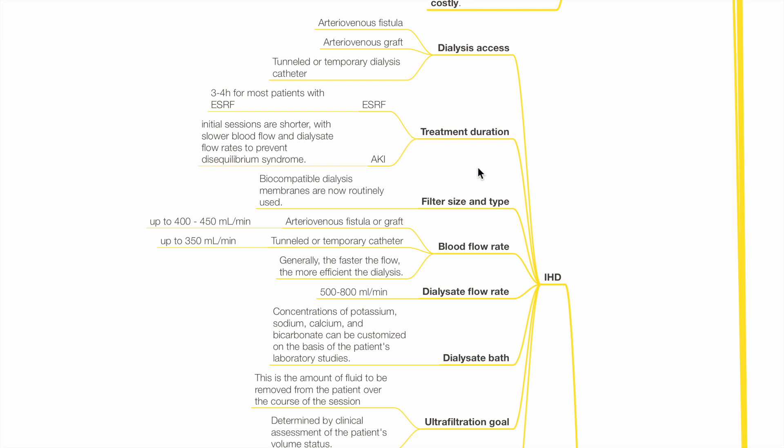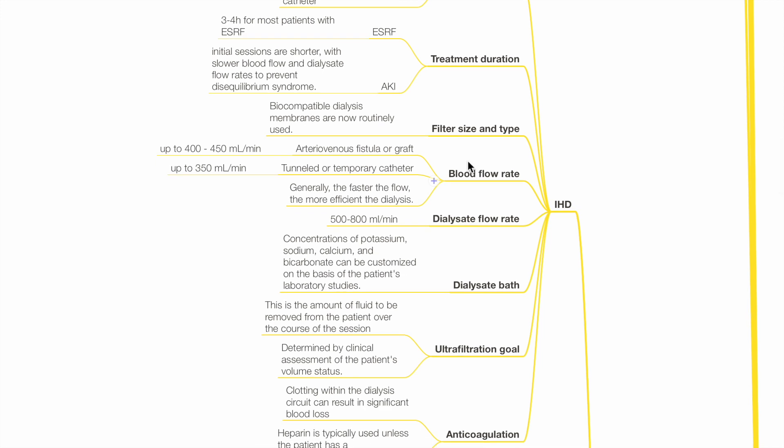Filter size and type. Biocompatible dialysis membranes are now routinely used. Blood flow rate. For AV fistula or graft, up to 400 to 450 mLs per minute. For dialysis catheter, up to 350 mLs per minute.